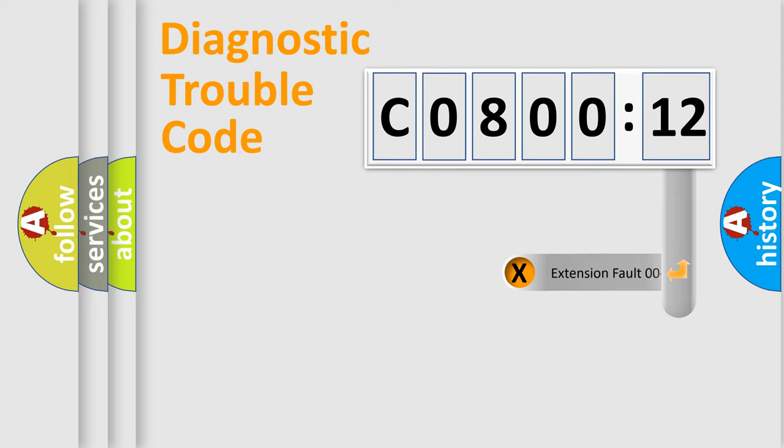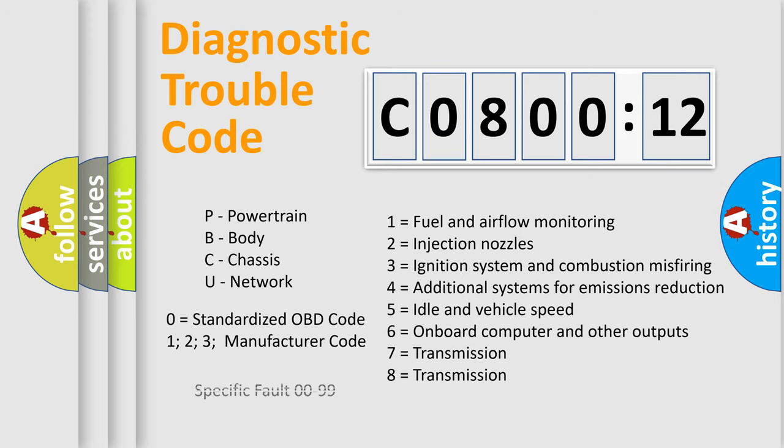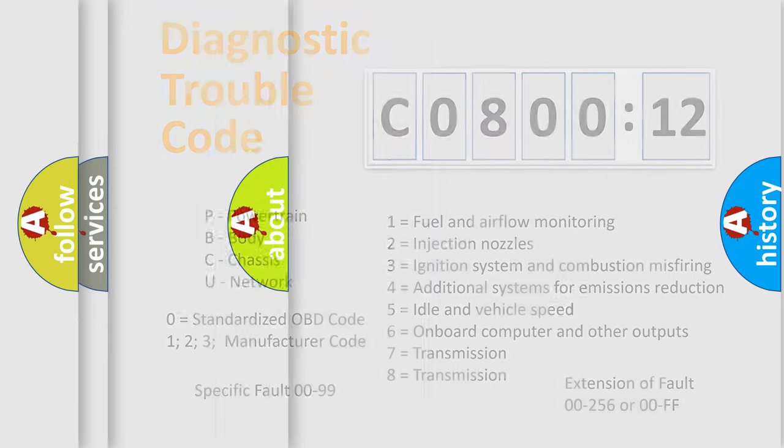Only the last two characters define the specific fault of the group. The add-on to the error code serves to specify the status in more detail, for example a short to the ground. Let's not forget that such a division is valid only if the other character code is expressed by the number 0.